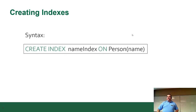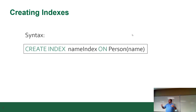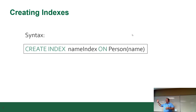The syntax for creating an index is one of the easiest you'll see: CREATE INDEX, give it a name, ON, then specify the table and the field or fields — one field or more, comma-delimited.